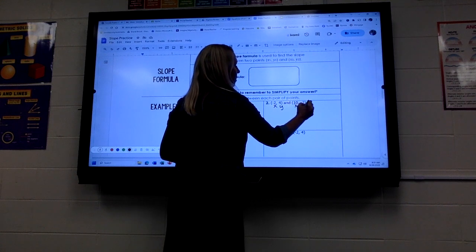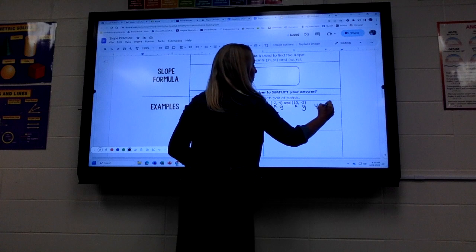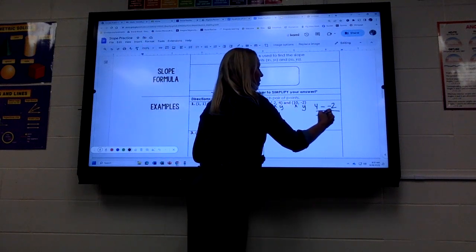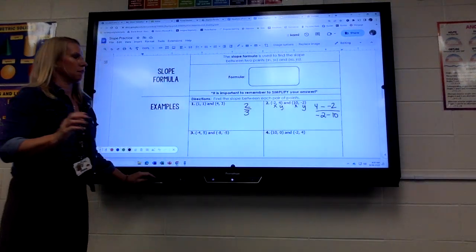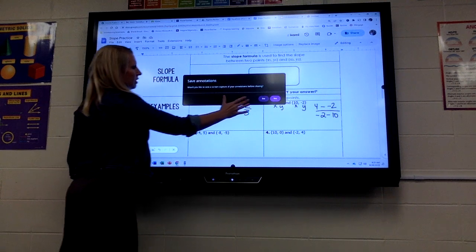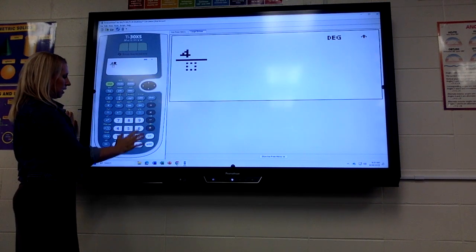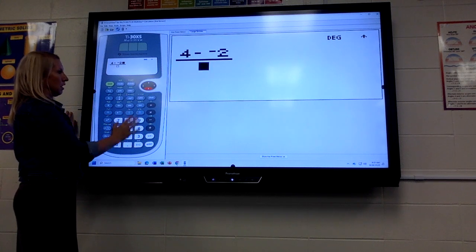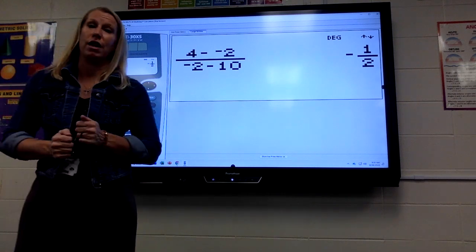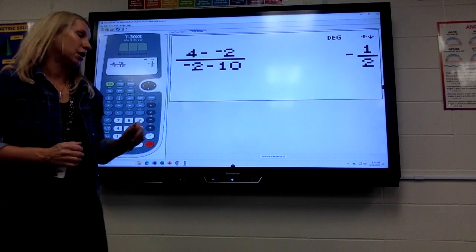x comma y, x comma y. We always subtract the y's on top. 4 minus negative 2. The x's on bottom, negative 2 minus 10. So 4 minus negative 2, negative 2 minus 10. Hit enter, and it would be negative 1 half. So just remember to subtract the y's on top and the x's on bottom on that section.